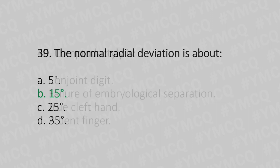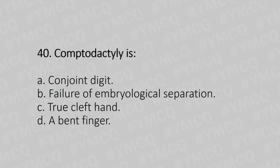Now let's move to question number 40. Camptodactyly is. Option A: conjoint digit. Option B: failure of embryological separation. Option C: true cleft hand. Option D: a bent finger. And the answer is Option D, a bent finger.